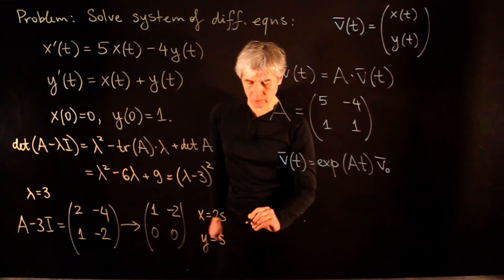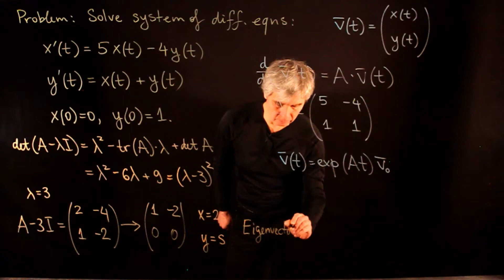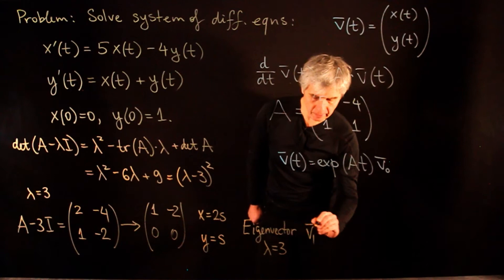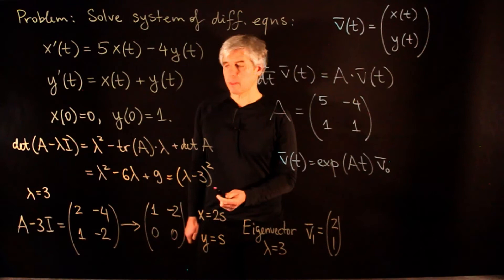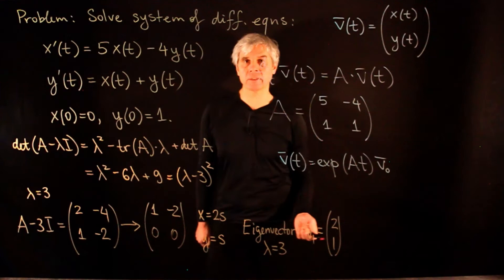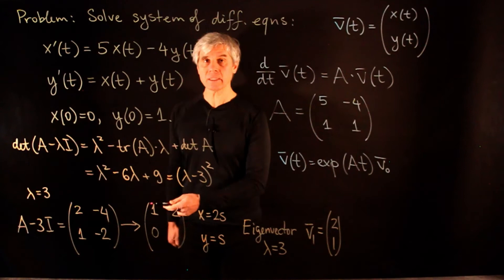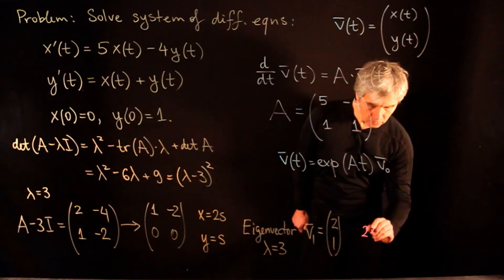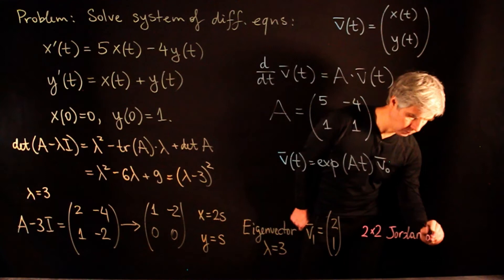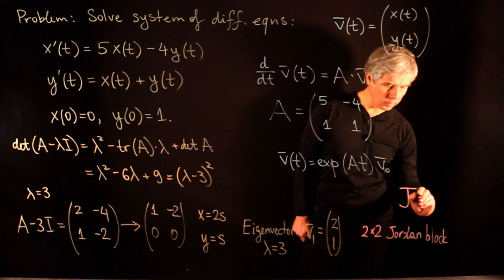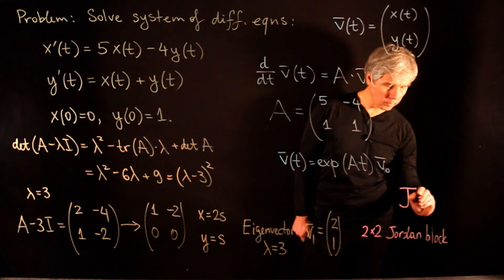Since we have a single eigenvalue and a single eigenvector for this 2×2 matrix, there is no basis of eigenvectors — the matrix is not diagonalizable and has a Jordan block. The Jordan normal form is J = [3, 1; 0, 3]. The root space diagram is a single strand of length 2, with the kernel of A - 3I at the bottom. For the generalized eigenvector v2, we choose any vector not in the kernel, say v2 = (1, 0). Then v1 = (A - 3I)v2, which is the first column of A - 3I, giving v1 = (2, 1).